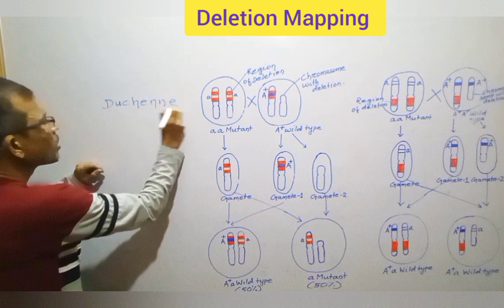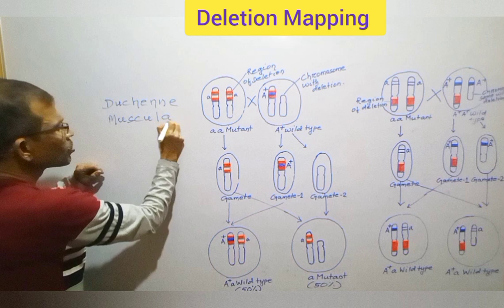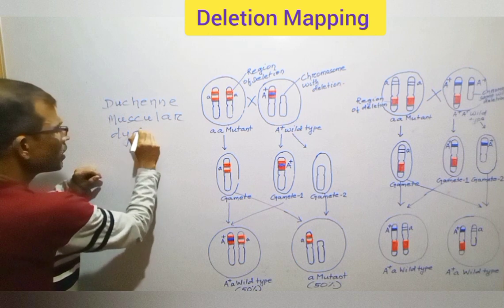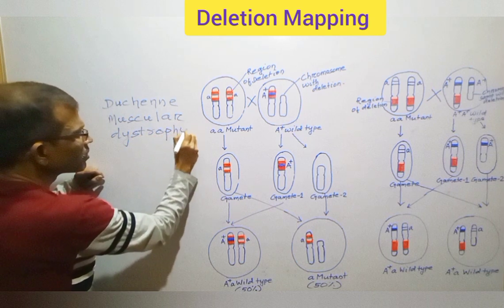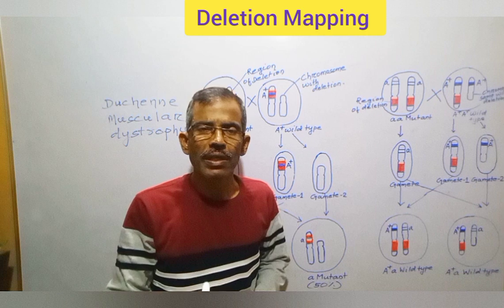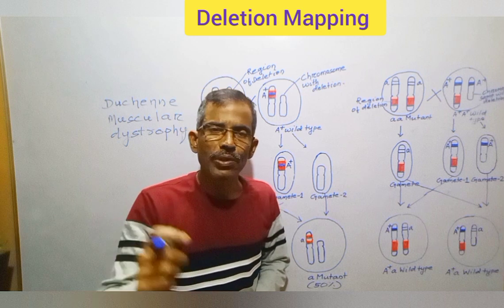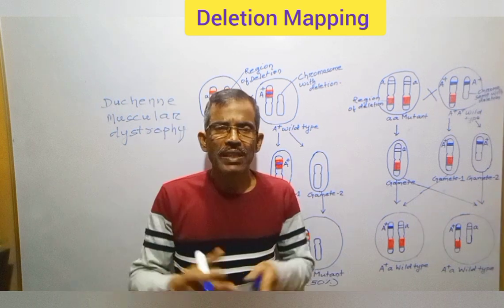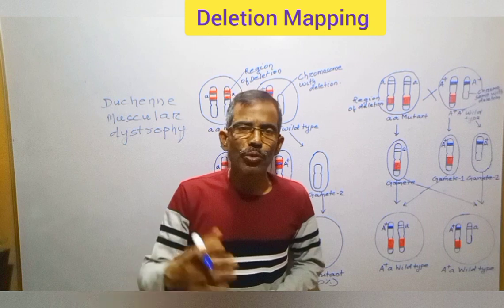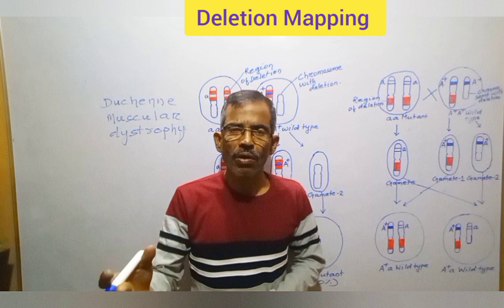For example, Duchenne muscular dystrophy is a disease characterized by progressive weakening and degeneration of muscles. From the study of its X-linked inheritance, the mutated allele was known to be present on the X chromosome, but its precise location was not clear. By examining different patients with Duchenne muscular dystrophy, the mutated allele was assigned to a small segment of the short arm of the X chromosome.